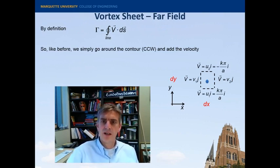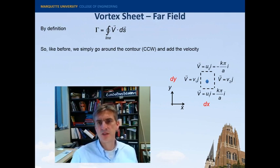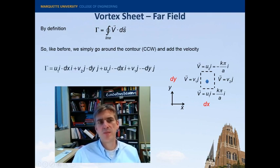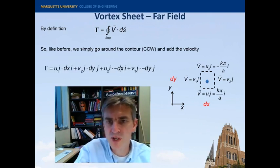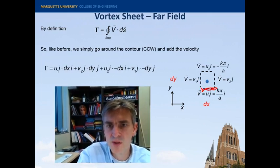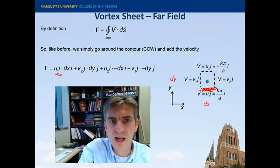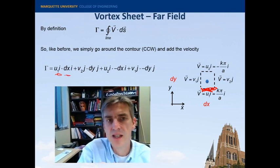So just like before, I just wrote the components of the velocity here along the contour that I've selected, just so that you can recognize them. And then we'll just simply sum along the line. So just like before, I'm going to start at the bottom and sum along this portion, which is u1 dotted with dx. And then I'm going to move up the side, v2 here, dotted with positive dy in the j direction.